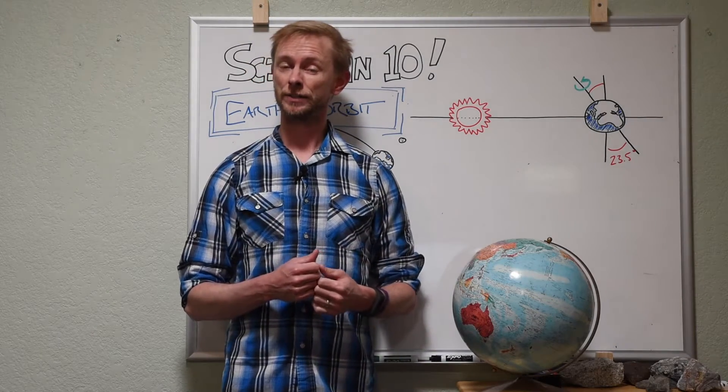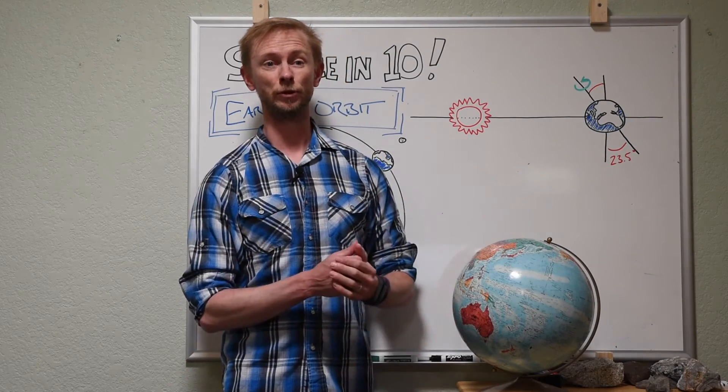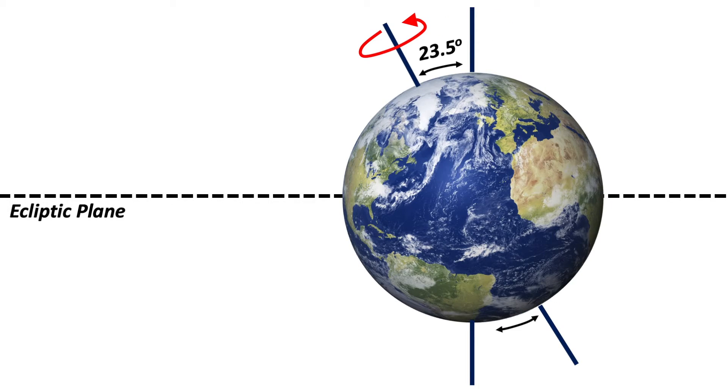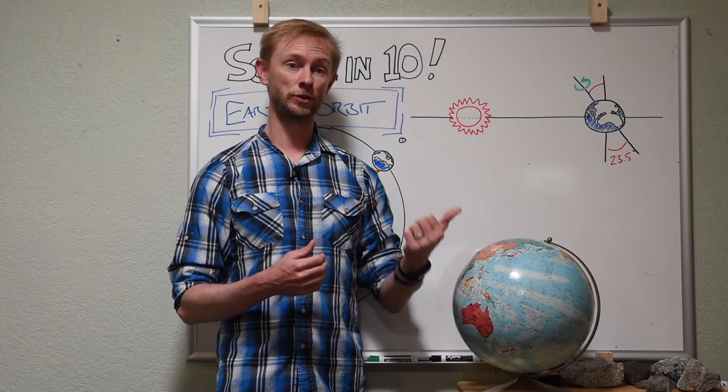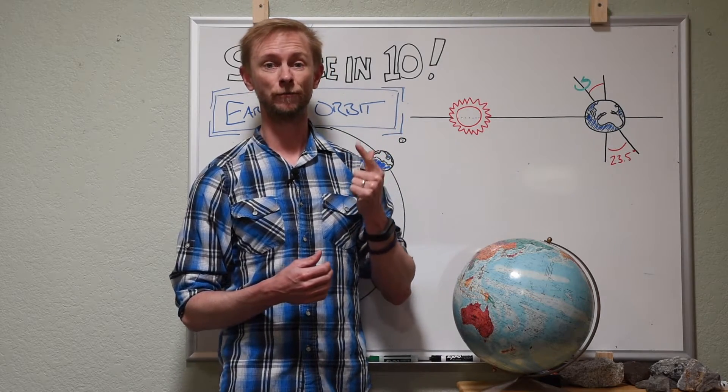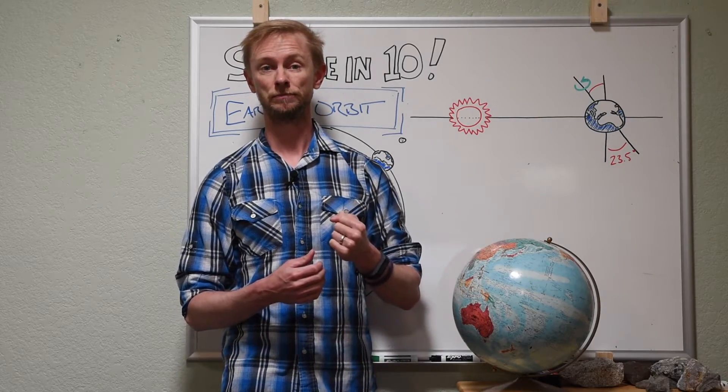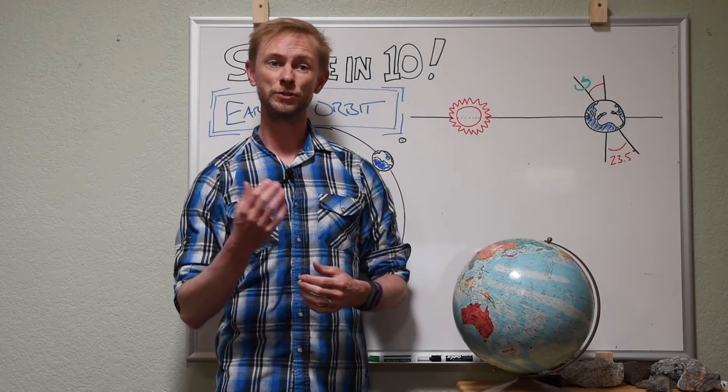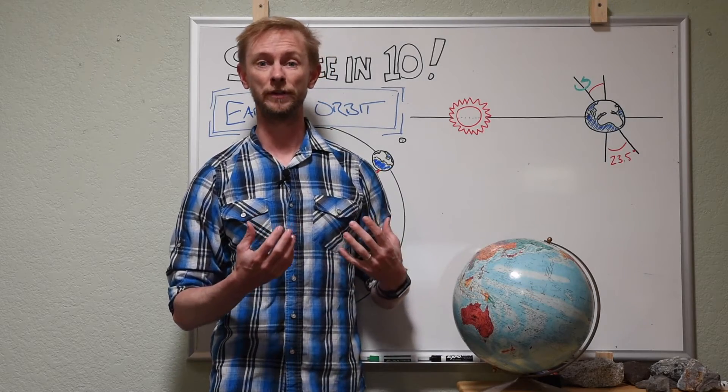Instead of Earth's rotational axis being perpendicular to the ecliptic plane, it is tilted or offset about 23.5 degrees. Though, this offset fluctuates between 22.1 and 24.5 degrees approximately every 40 to 41,000 years. The obliquity of the rotational axis causes different parts of the Earth to receive more solar radiation than others throughout the year.